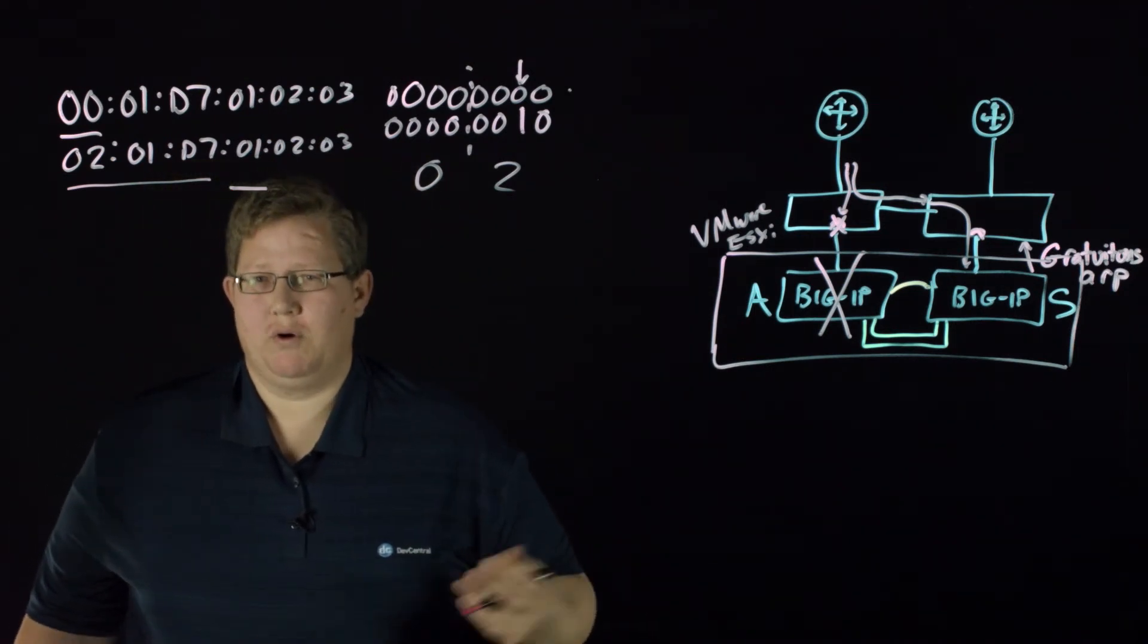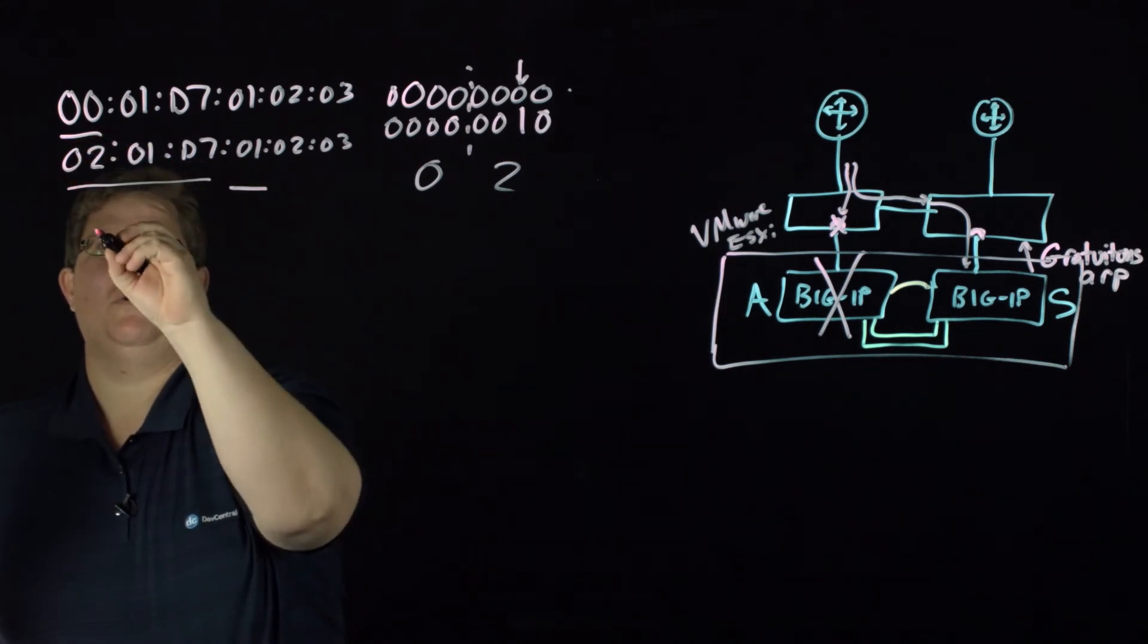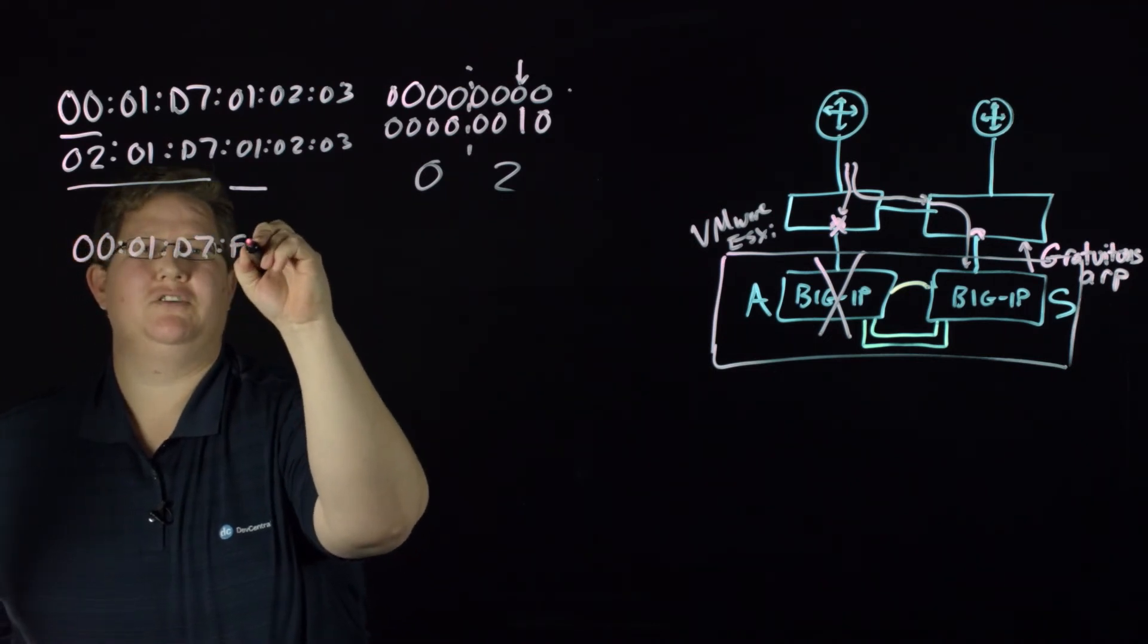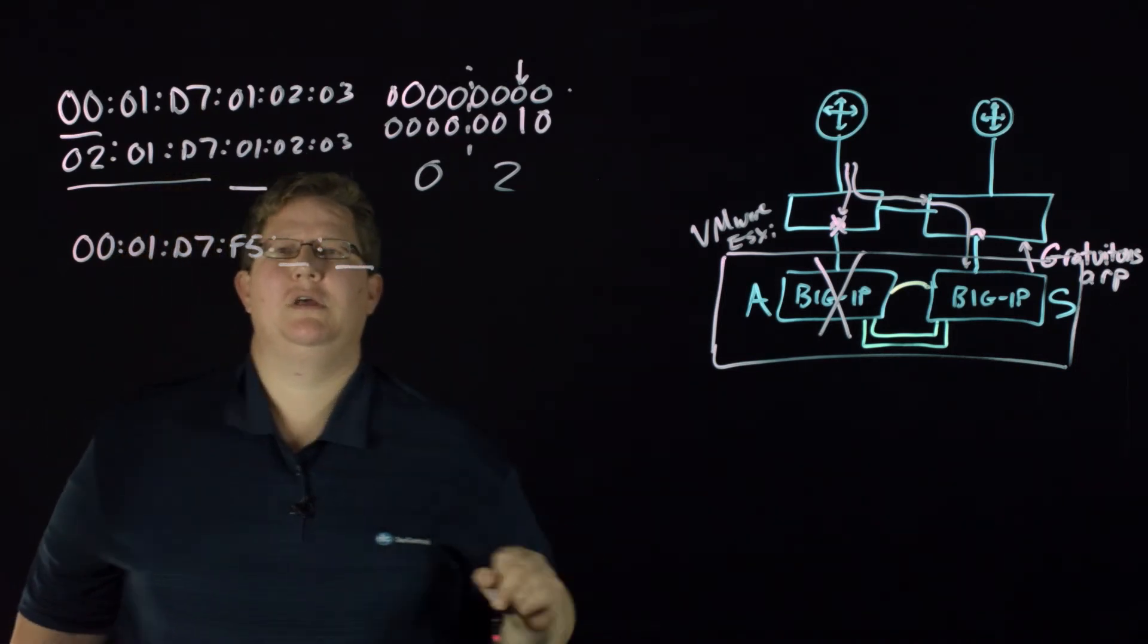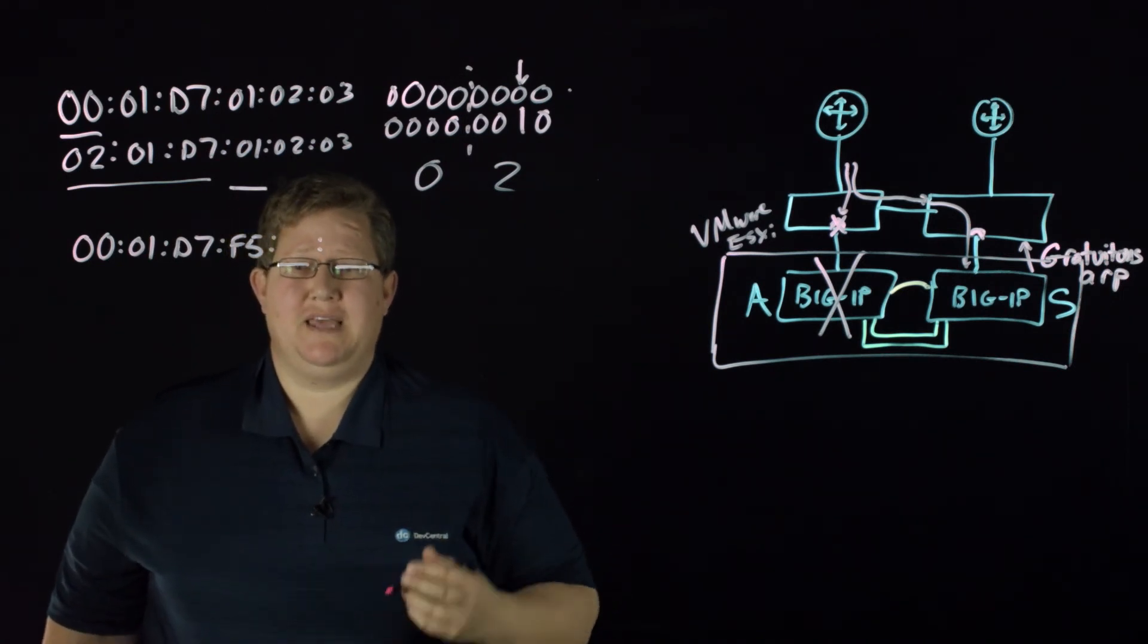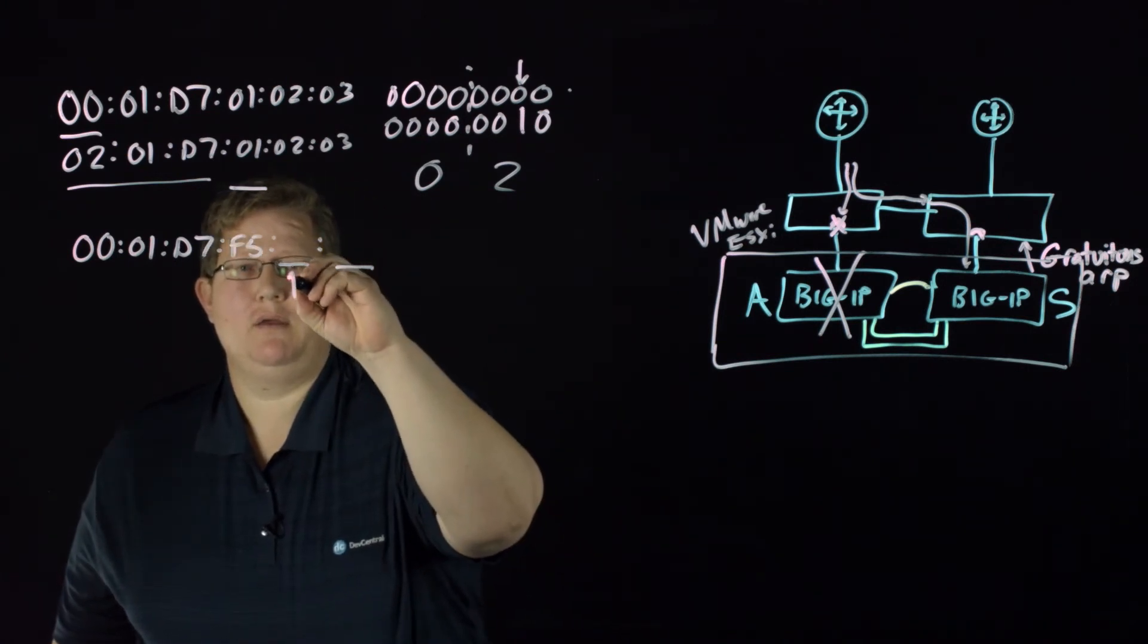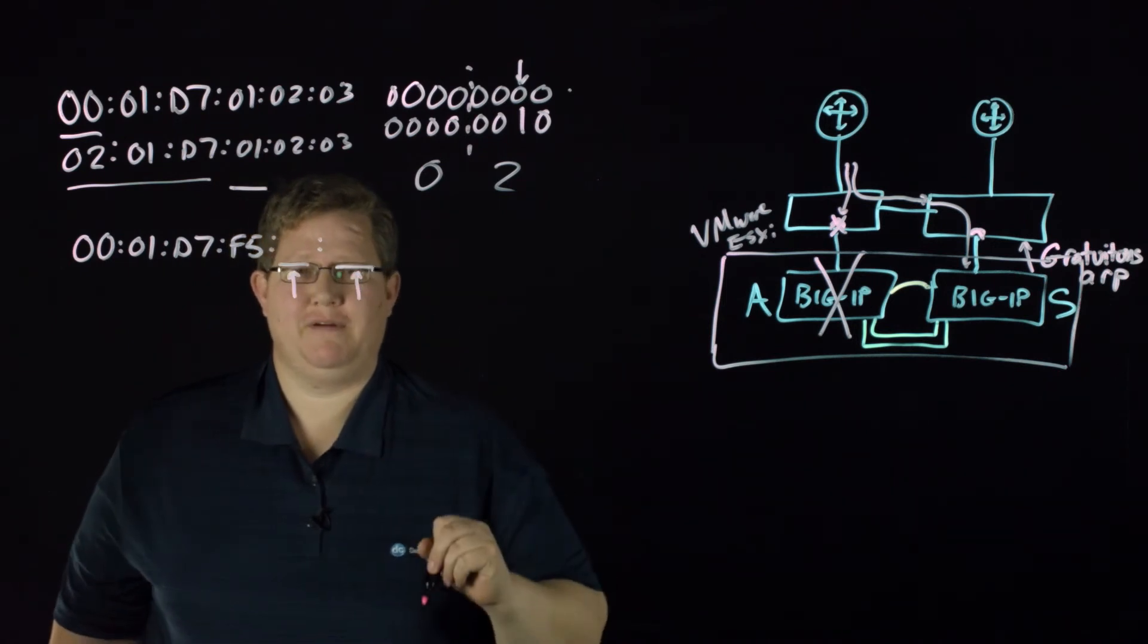And so the recommendation there, of course, because it's F5, maybe just change this original one from this address. We'll keep the original MAC address and then we'll just change this to F5. And then you have these additional octets. And what do you do with these additional octets? One of the recommendations there is that you could set this to your device group ID and your traffic group ID.